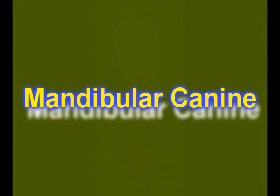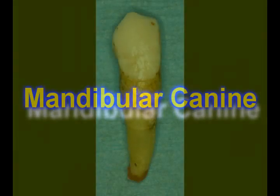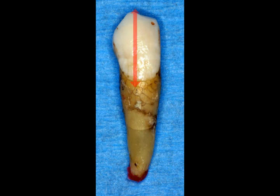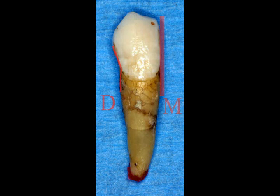The last tooth we'll look at is the mandibular canine. The mandibular canine has a long or stretched crown as compared to the maxillary canine. Looking at the facial or lingual view of this tooth, you'll notice that the mesial is straight. The distal surface will have a bend or curve at the CEJ, and the distal surface is dramatically more curved than the mesial surface.